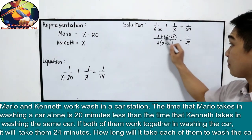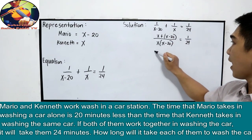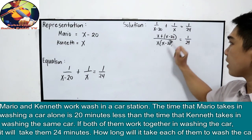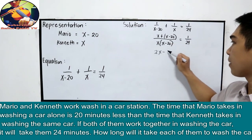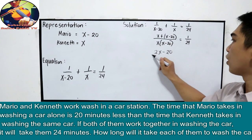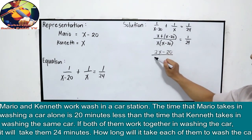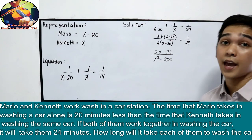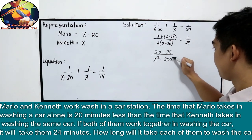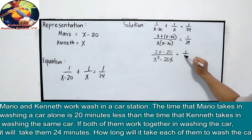Next, simplify na natin. So, x plus x, that is 2x. Positive times negative minus 20. Over x times x, that is x squared minus 20x. May x tayo. So, x times negative 20 is negative 20x. Is equal to 1 over 24.